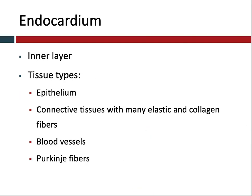Finally, you have the endocardium, which is the inner layer of the wall of the heart. It has lots of different types of tissue, including epithelial tissue, connective tissue, blood vessels, and something called Purkinje fibers. These Purkinje fibers are specialized fibers that help with heart muscle contraction. So there you have the pericardial sac or pouch that surrounds the heart, as well as the three layers that make up the walls of the heart.